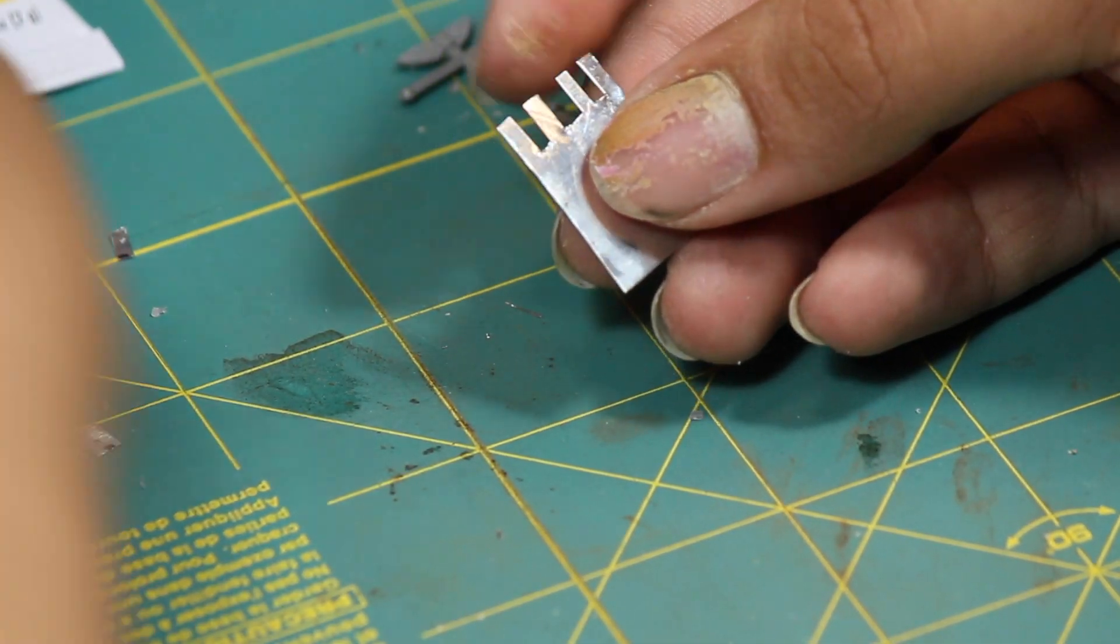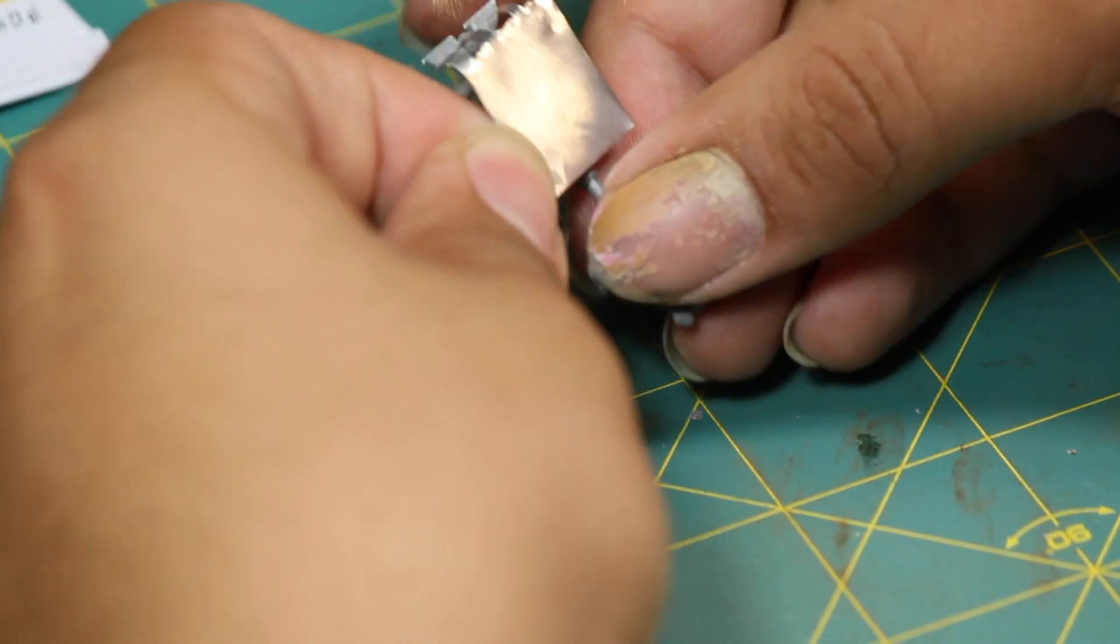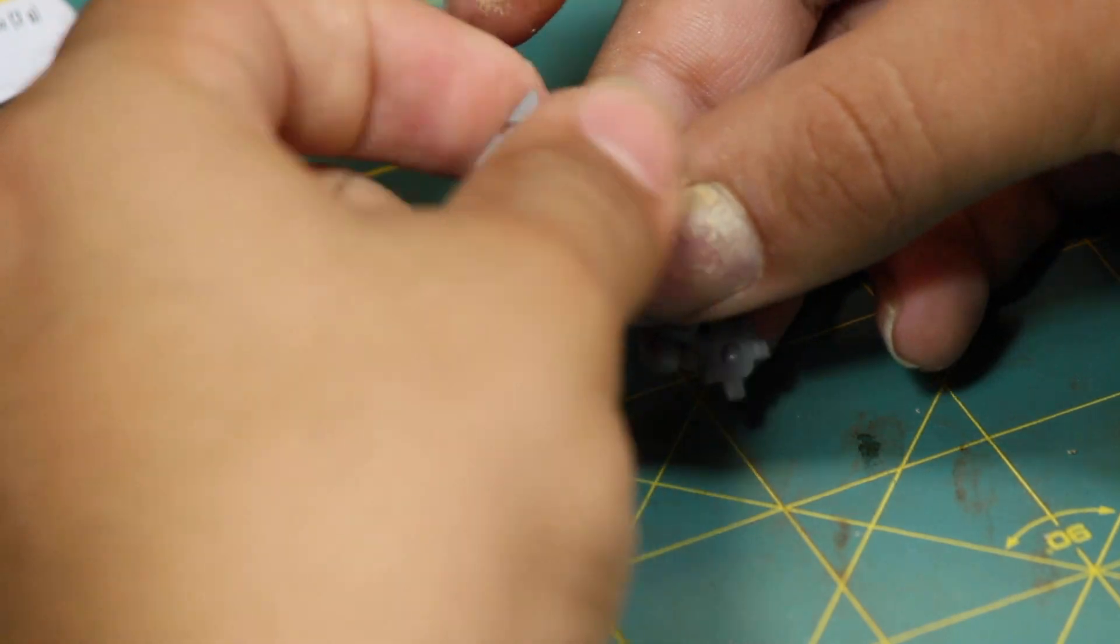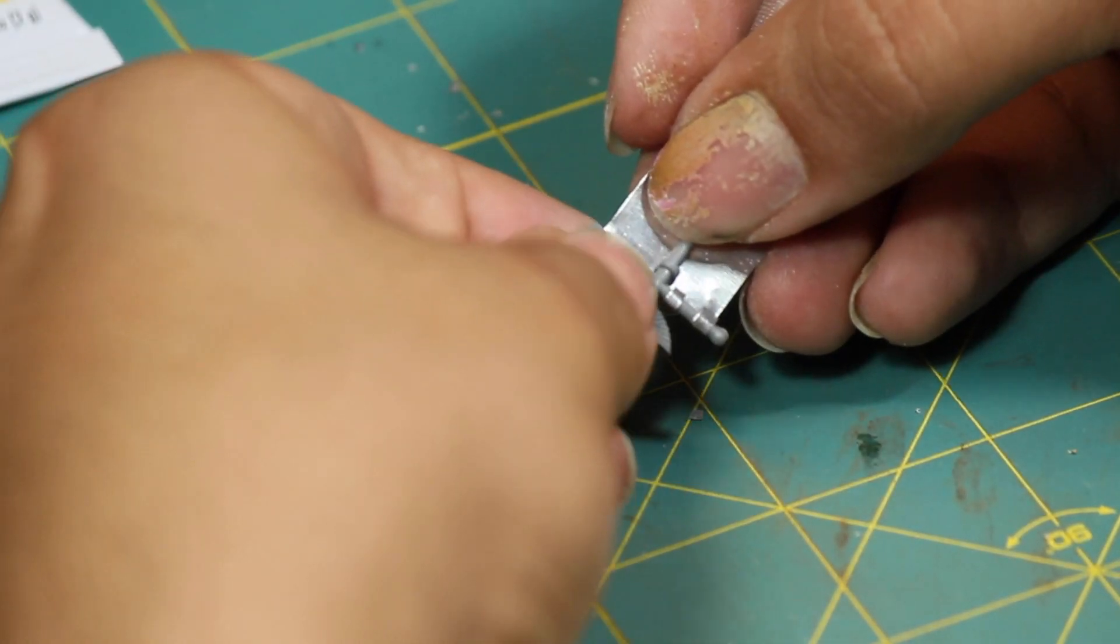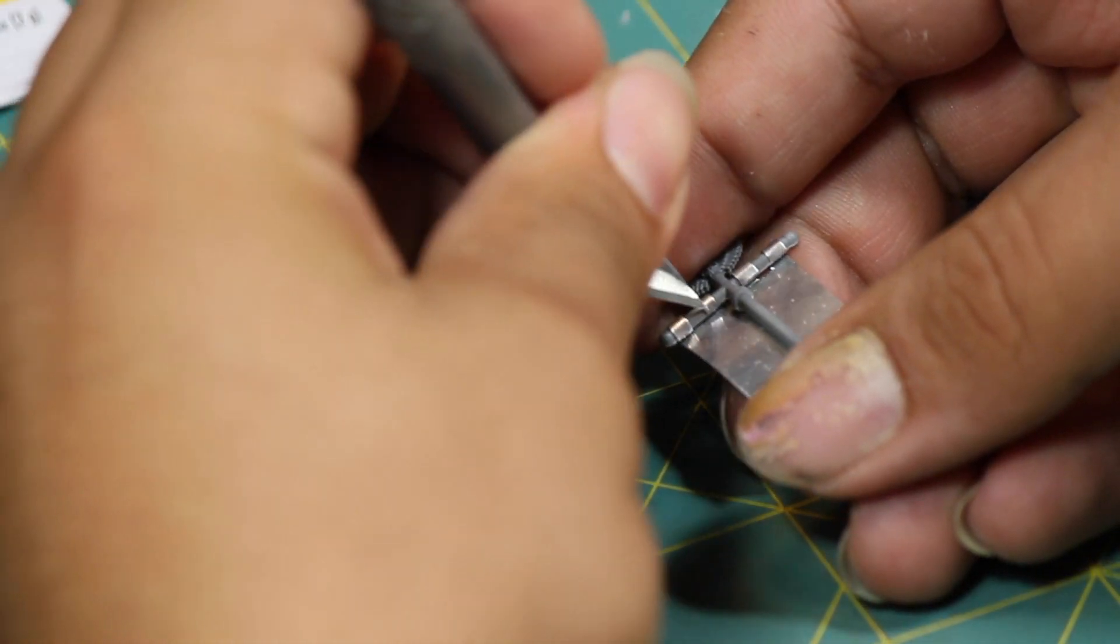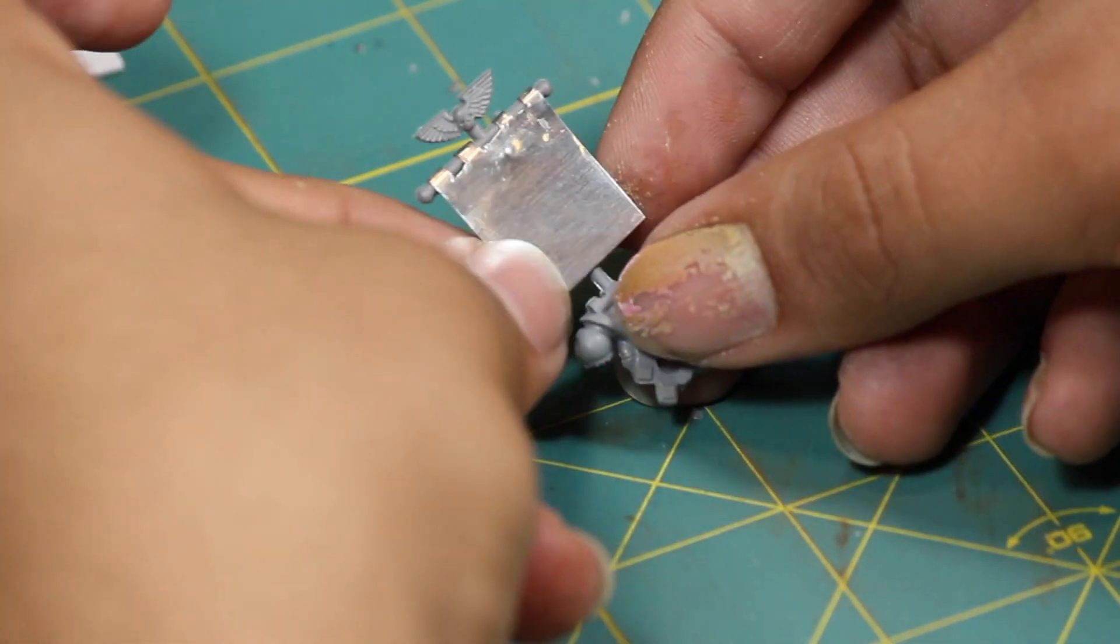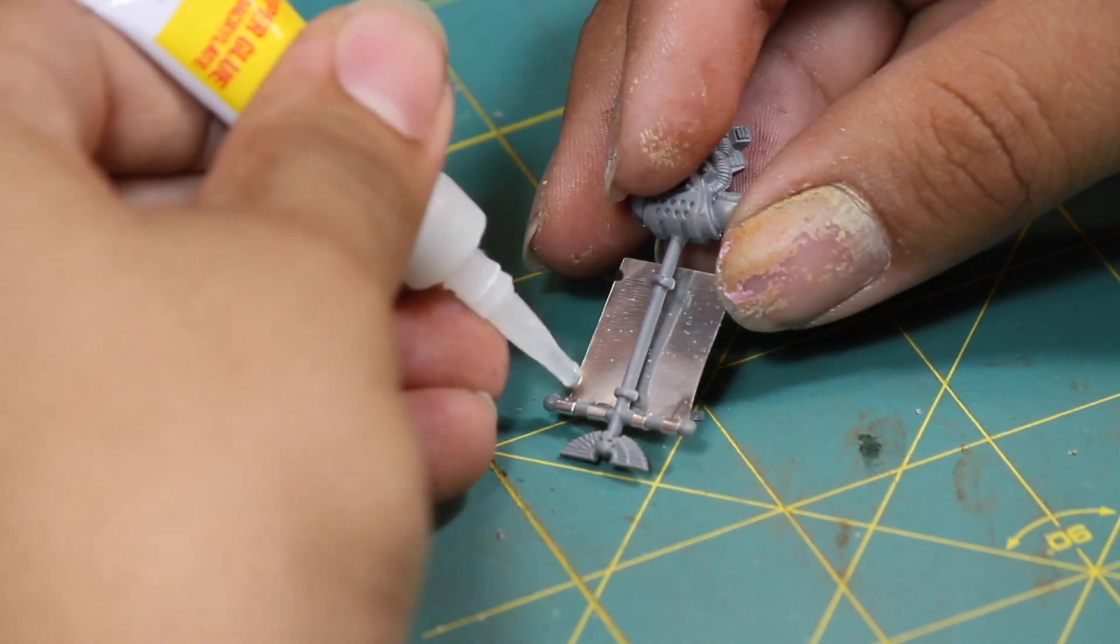Once I was happy with my banner, I then used a round handle of a tool to curl the tabs and then I carefully position them onto the pole and I curl them over to hold it in place. Once I liked the look of the banner, I then applied a few drops of super glue to hold it in place.